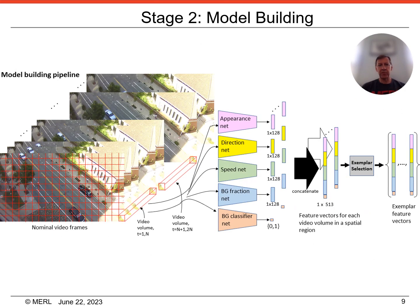The second stage of our approach is to use the previously trained high-level attribute networks to provide feature vectors that describe the appearance and motion within a video volume. The nominal video for a scene is divided into a grid of regions, and a fixed-sized video volume is scanned spatially and temporally over the video. An exemplar-based model of the typical high-level feature vectors found in nominal video for each grid region of a particular scene is then built using an exemplar selection algorithm. The feature vectors from the penultimate layers of each deep network are concatenated and used as high-level feature vectors, also called exemplars, in the model. These can be mapped to high-level attributes using the final linear layer of each network. The resulting model consists of a set of exemplars for each grid region, representing all normal activity occurring in each region of the scene.